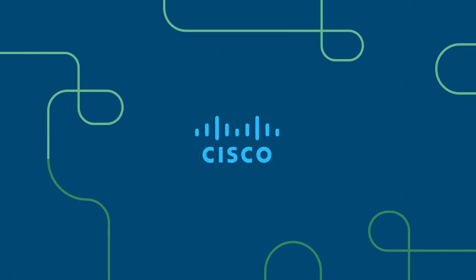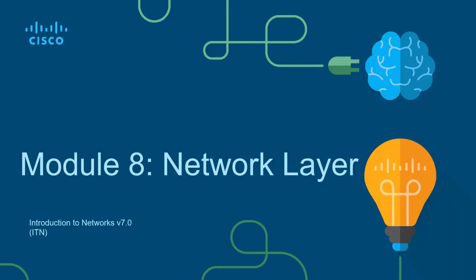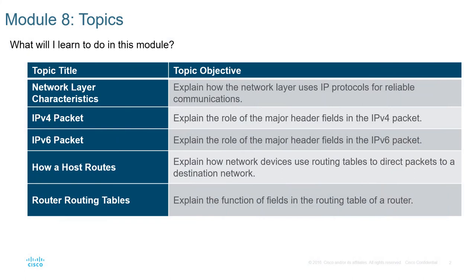Welcome to my Introduction to Networking course, typically abbreviated ITN. This will be for the CCNA version 7 curriculum, Module 8: the network layer. In this module we're going to be talking about IP packets and routing. IP packets come in both IPv4 and IPv6, and we're going to discuss how the router makes decisions on path selection — that's essentially what routing is.